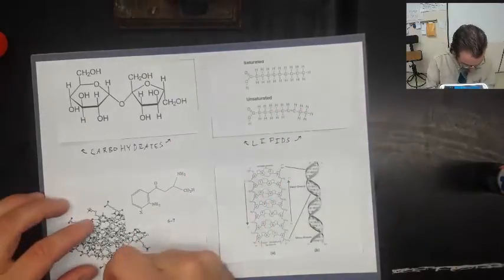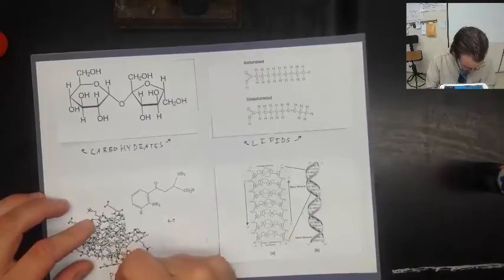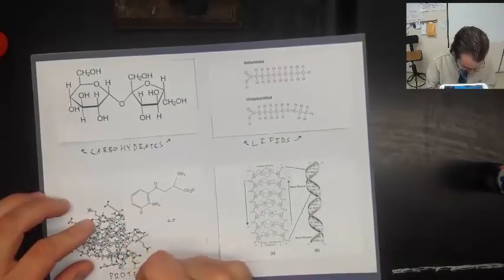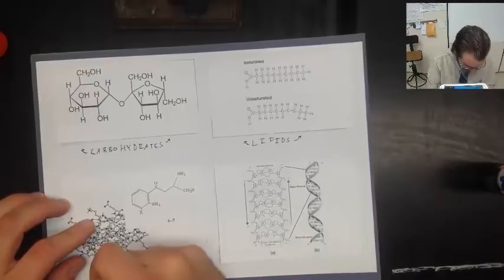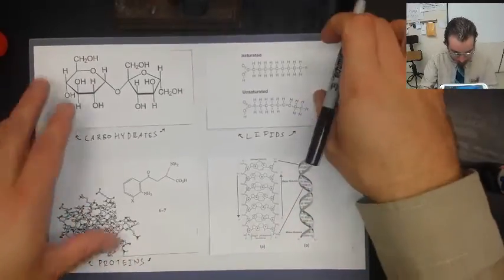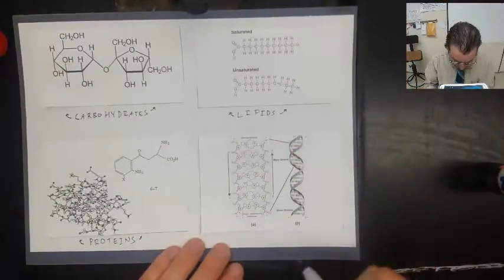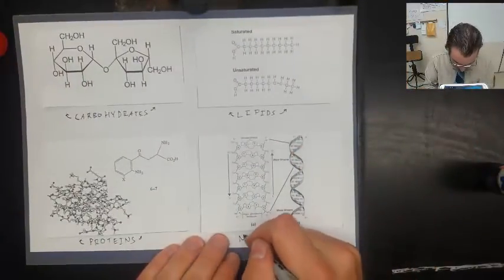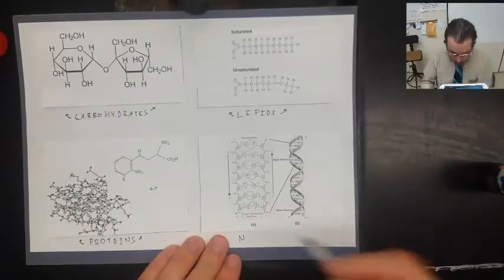Up here. These over here are proteins. E-I-N-S. A little arrow. A little arrow. And these right here are nucleic acids. Like a deoxyribonucleic acid. Or DNA.